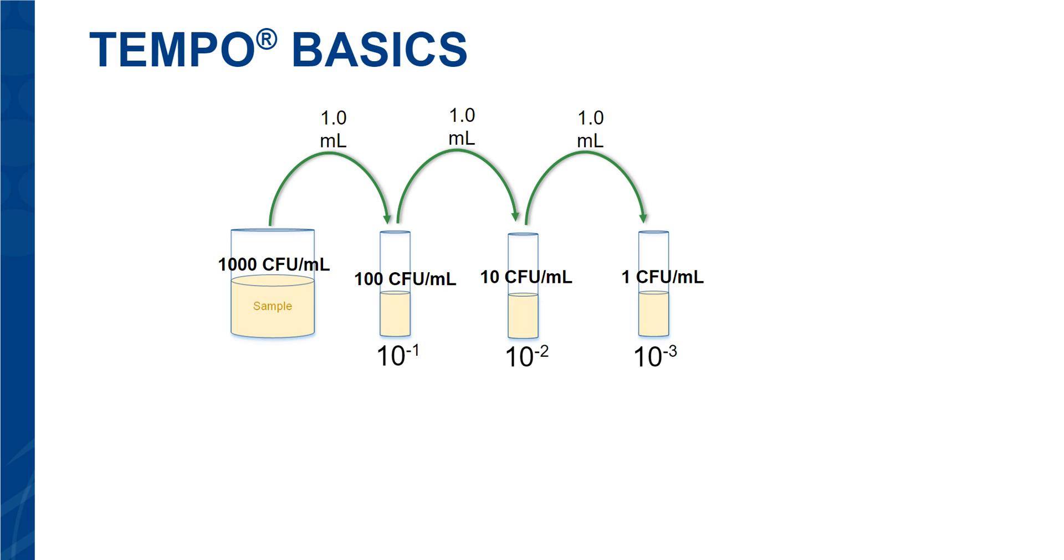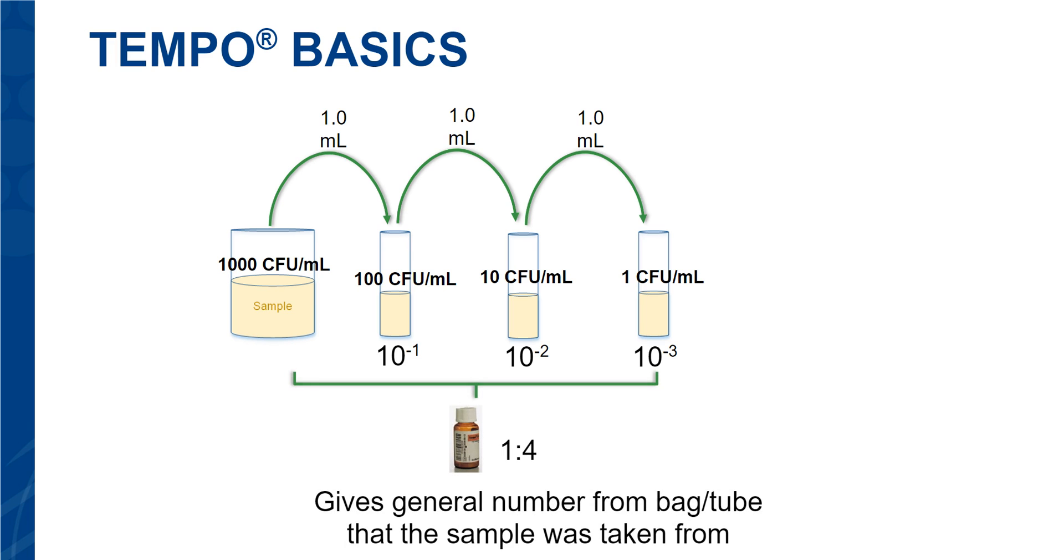If you sample from any of the tubes and call it 1 to 4, you will get that number. A sample taken from the first tube at 1 to 4 will give approximately 100 CFUs.